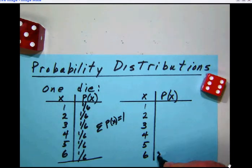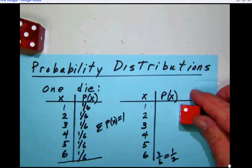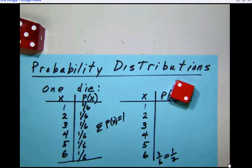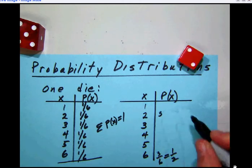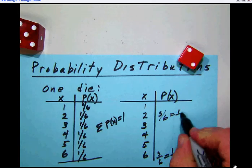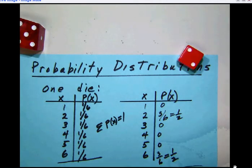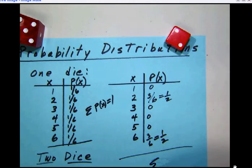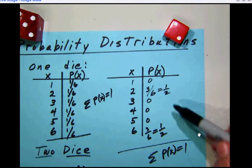The chance of rolling a six is three out of six, which is one half. Similarly, there are three sides with a two, so the probability of rolling a two is also one half. The other numbers simply don't come up, so their probabilities are zero. Once again, the total probability — the summation of the probability of X — equals 1, because there's a 100% chance that something happens.